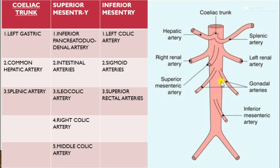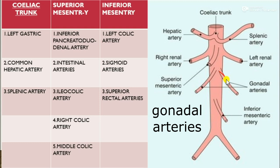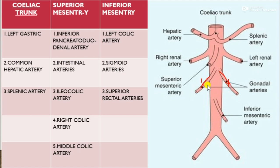The gonadal arteries, either testicular or ovarian, are long vessels that arise from the aorta below the renal artery at the level of L2. They supply the testes in males and the ovaries in females.